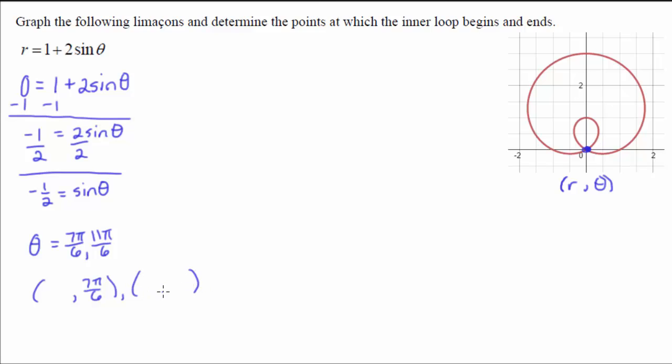And so the r part of our points is what we actually initially set r to be. We said r had to be 0, and so that means both of these points will have zeros for r. And so this would be our answers. So if we're trying to solve for when our inner loops will happen, then we just set equal to 0 and solve.